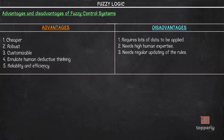Despite these advantages, there are also disadvantages. First, it requires a lot of data — we need large amounts of data to build the fuzzy rule base and knowledge base. Second, it requires high human expertise: the accuracy of a fuzzy control system depends on the knowledge and expertise of the human beings designing it. Third, it needs regular updating of the rules — the if-then rules of the fuzzy rule system must be updated regularly.